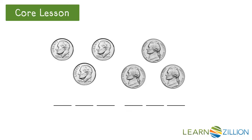Erica has the following coins. She wants to know how much money she has. There are three dimes. Dimes are worth ten cents, so she should skip count by tens: ten, twenty, thirty.